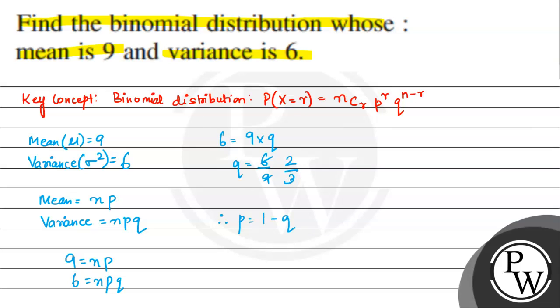p is equal to 1 minus q. Mujhe eh pata hai. So here p hai mera nikal na hai mujhe, 1 minus 2 by 3. Ye ho jaye ga bachcho, 1 by 3. p ki value a gaya 1 by 3.